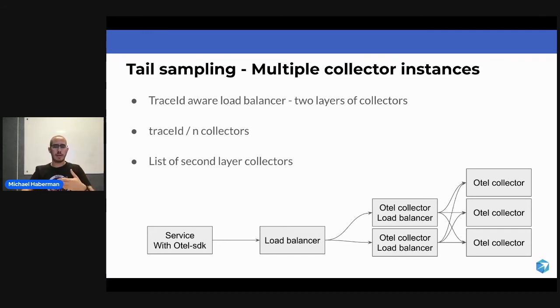The load balancer is aware of the trace ID. So it's going to take the trace ID and divide it by the N collector instances that it has and spread them across those OpenTelemetry collectors.